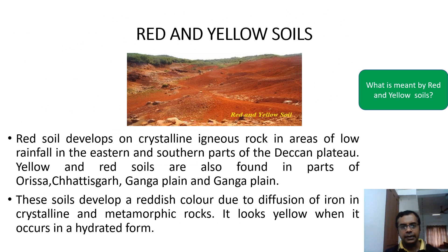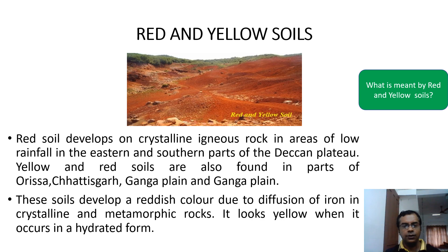What is meant by red and yellow soils? This is the third classification of soil found in our country. Red soil develops on crystalline igneous rock in areas of low rainfall in the eastern and southern parts of the Deccan Plateau. Yellow and red soils are also found in parts of Odisha, Chhattisgarh, the Ganga Plain, etc. These soils develop a reddish colour due to diffusion of iron in crystalline and metamorphic rocks. It looks yellow when it occurs in a hydrated form.